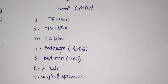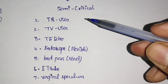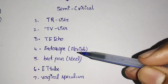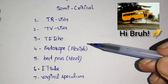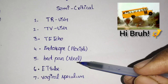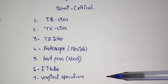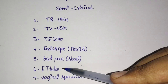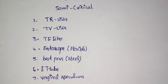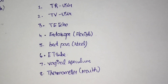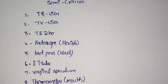Examples of semi-critical include: transrectal ultrasound and transvaginal ultrasound — both contact mucous membranes; transesophageal echocardiography; flexible endoscope — note that flexible endoscope is semi-critical whereas rigid endoscope is critical; non-recyclable steel bedpan; urine bottles; ET tube, which contacts mucous membrane; vaginal speculum; and thermometer placed in the mouth, since it contacts mucous membrane.